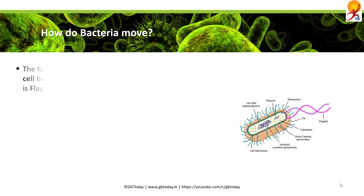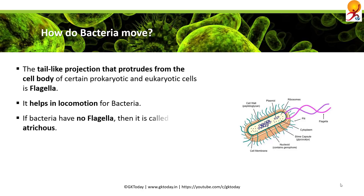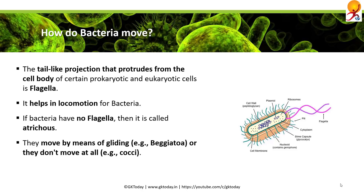How do bacteria move? There are tail-like projections that protrude from the cell body of certain prokaryotic and eukaryotic cells — this is called flagella. Bacteria usually have them and use them for locomotion. If they don't have any flagella, they are known as atrichous, and in that case they usually move by means of gliding, like Beggiatoa, or they don't move at all, like Cochleus.